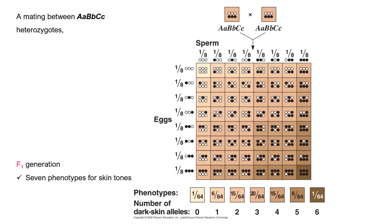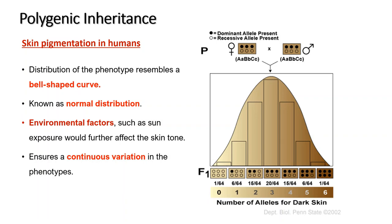This diagram shows a cross between heterozygous individuals for skin tone. In the F1 generation, there appear to be 7 phenotypes for skin tone when considering 3 genes. Should there be an increase in the number of alleles, there would be an increase in the number of phenotypes. The distribution of phenotypes resembles a bell-shaped curve when plotted, known as normal distribution. Environmental factors such as sun exposure further affect skin tone, ensuring continuous variation in the phenotype.